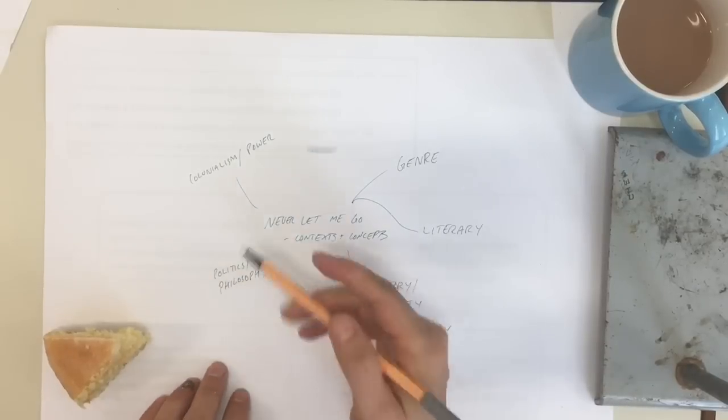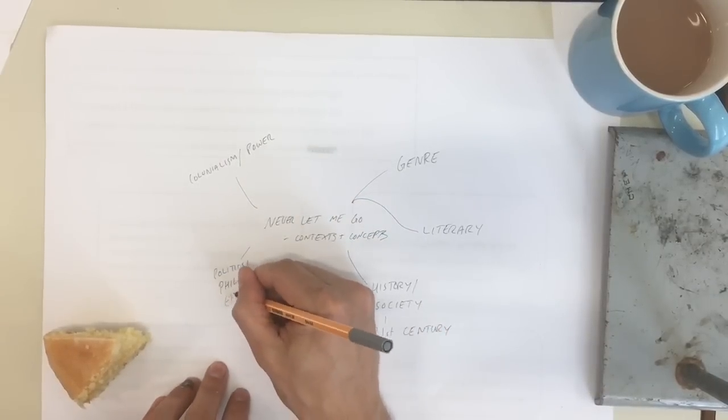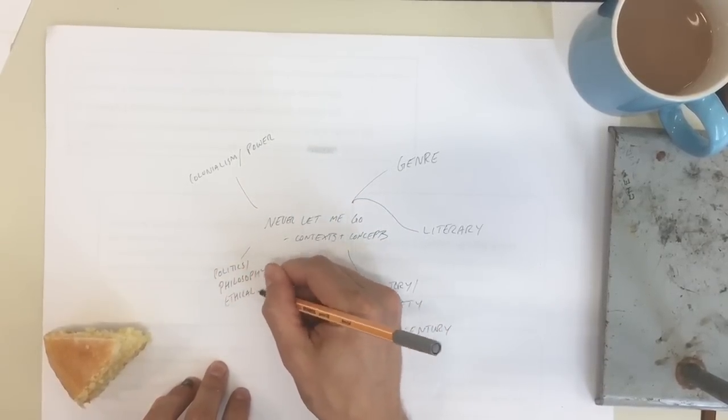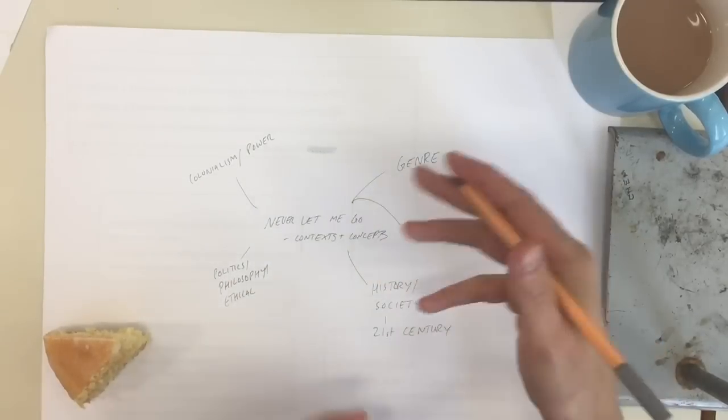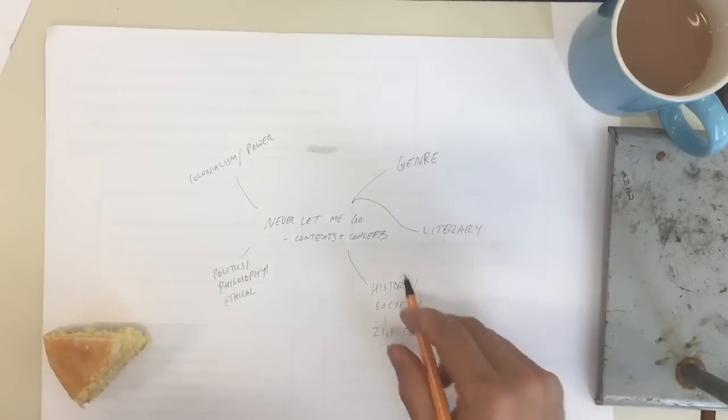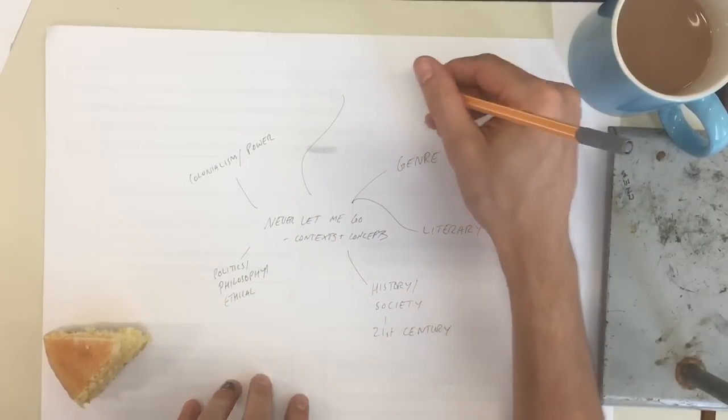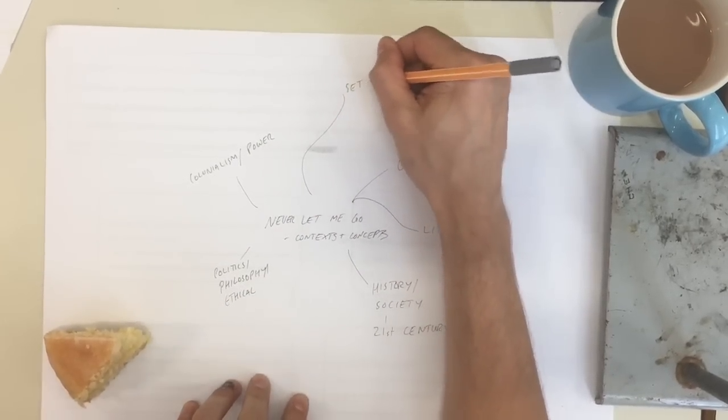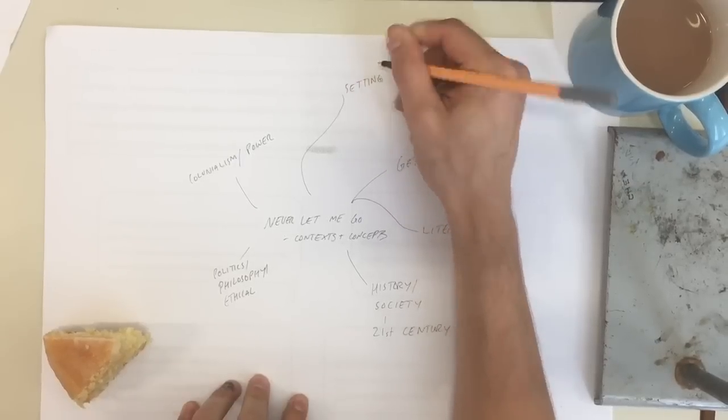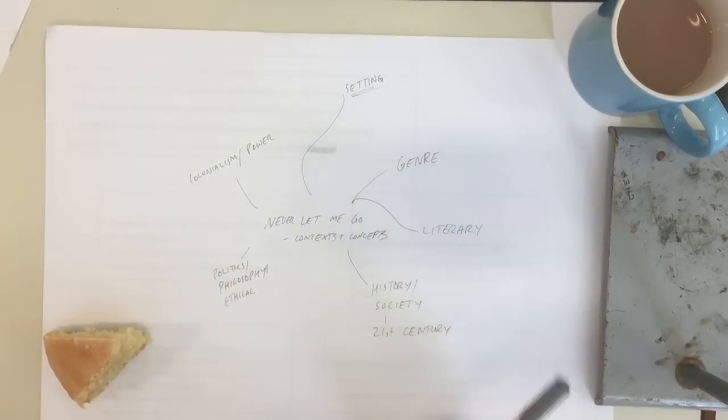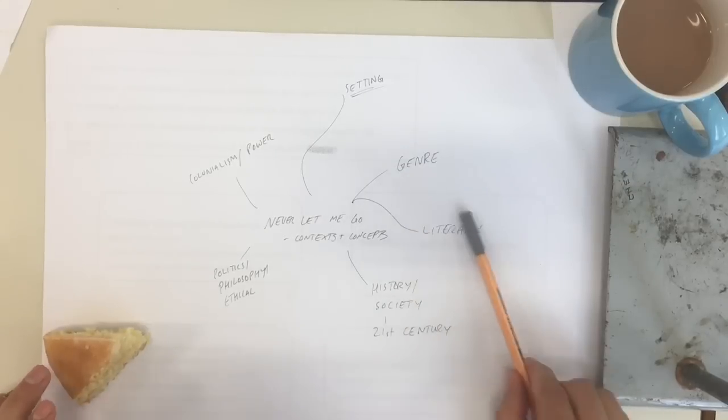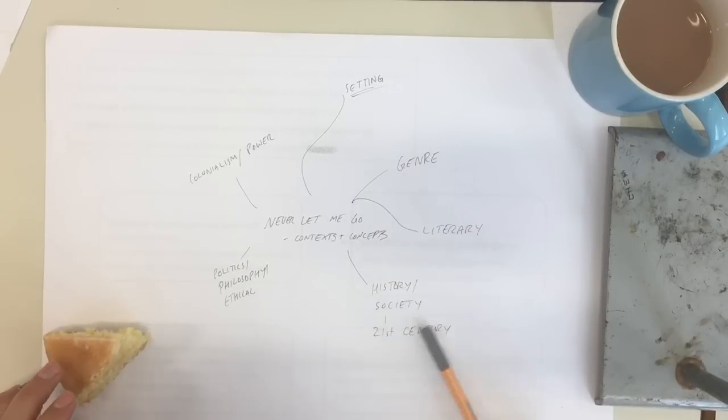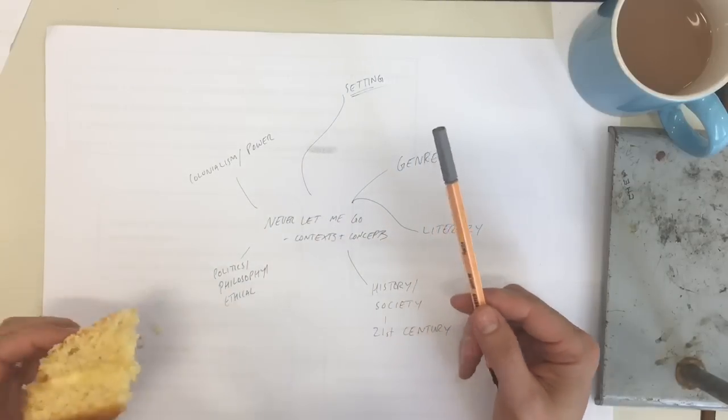So we're going to look at the ethical questions, the ethical dilemmas posed by the text really. I think also when we're looking at this history of society that's significant, but we might also look at the setting. So it's set in the UK which might be important. So we're going to look at setting, genre, literary influences, history of society of the 21st century, key ethical and political and philosophical issues, and the issue of colonialism.